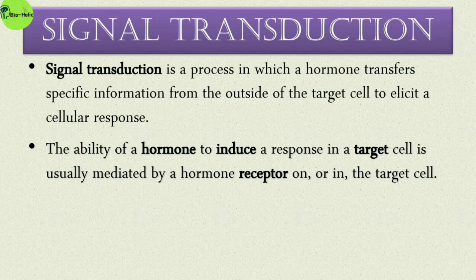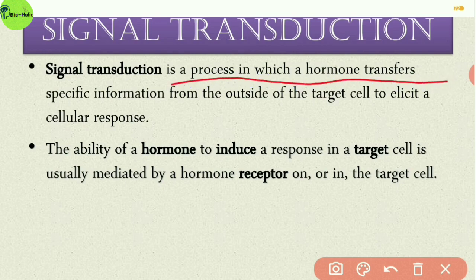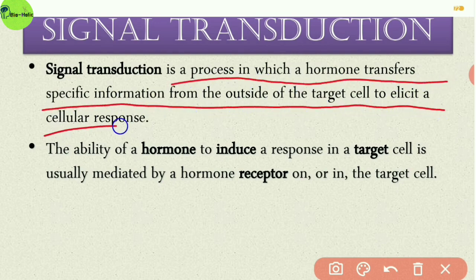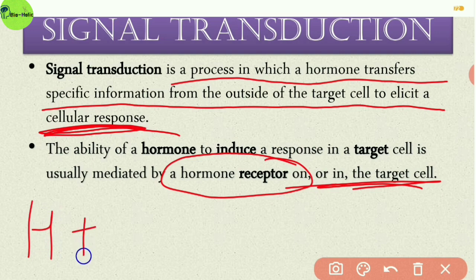First, I want to introduce you to the term signal transduction. Signal transduction is a process in which a hormone transfers specific information from the outside of the target cell to elicit a cellular response. The ability of a hormone to induce a response in a target cell is mediated by a hormone receptor on or in the target cell. All hormones follow the signal transduction mechanism — first, hormones bind to a receptor that may be present on the cell surface, or in the cytosol or nucleus of the target cell.